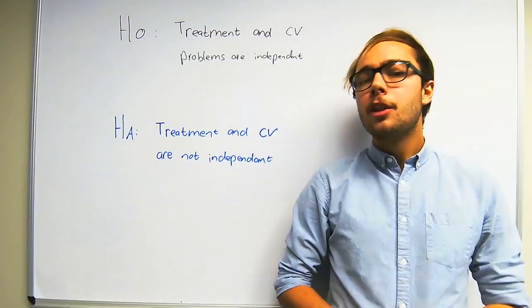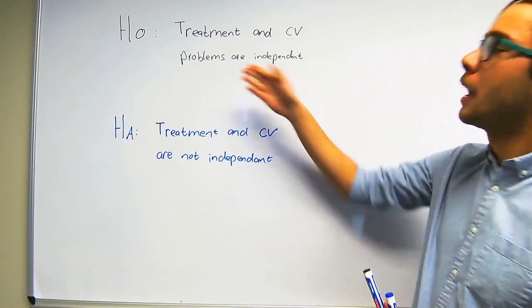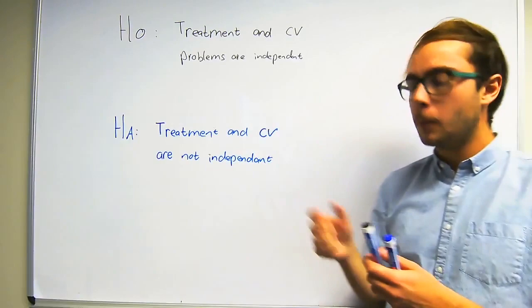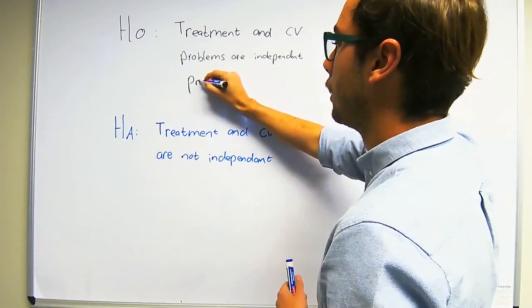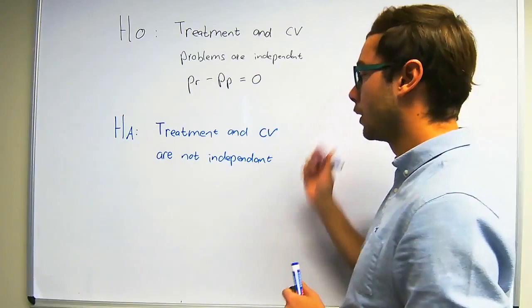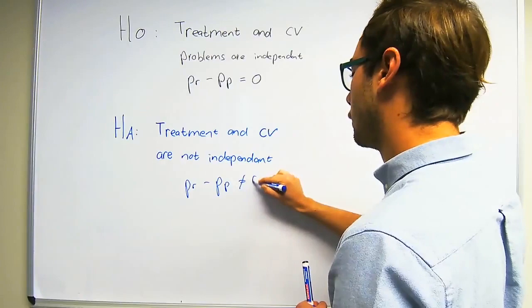Question 2.35 A asks us to write a set of hypotheses comparing the rates for cardiovascular problems for the two treatment groups. The null hypothesis will be: treatment and cardiovascular problems are independent. The alternative hypothesis will say: treatment and cardiovascular problems are not independent. Written out, the null hypothesis is the proportion of rosoglitazone minus the proportion of pioglitazone equals 0, meaning there's no difference between the two proportions. For the alternative hypothesis, the proportion of rosoglitazone minus the proportion of pioglitazone will not be equal to 0, meaning there's a difference and they are not independent.